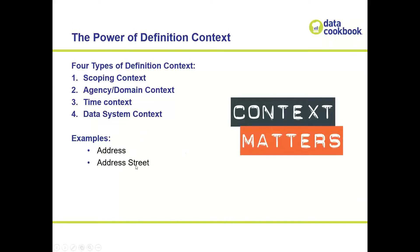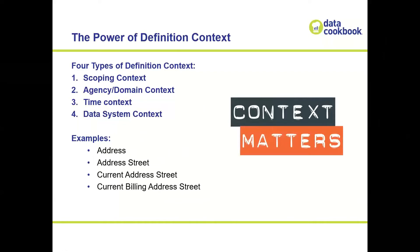'Street' is a scoping context — it's a narrower definition of an address. So we're talking about the street part of an address. That's the scoping context. A time context for this would be 'my current address street' — that's a time context applied to it.